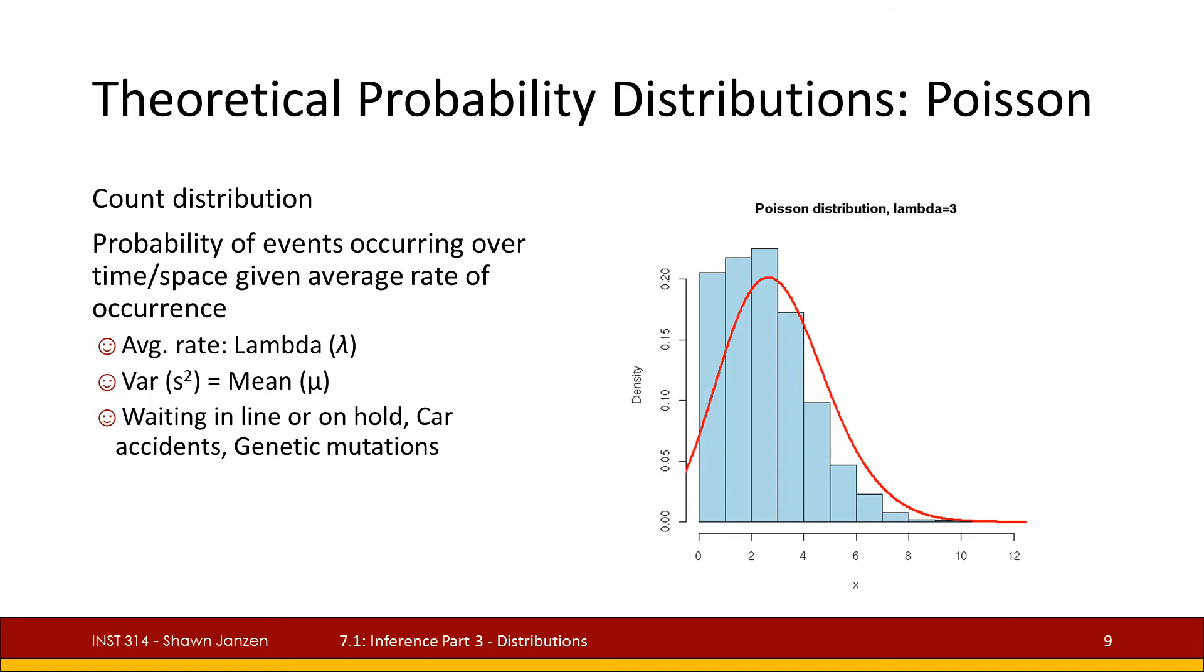And some examples when we might actually see Poisson distributions are if you're waiting in line for say tech support or on hold waiting to speak to your bank representative. It also happens in car accidents and genetic mutations. A lot of things that happen in the natural environment around us are characterized by a Poisson distribution.